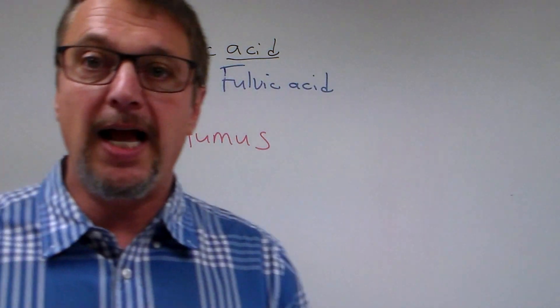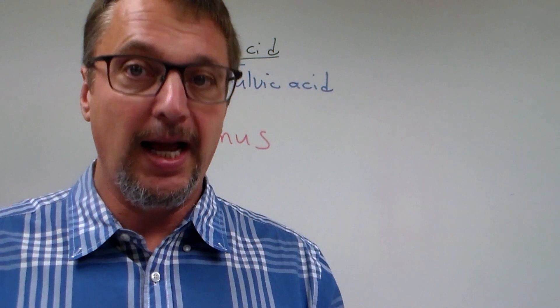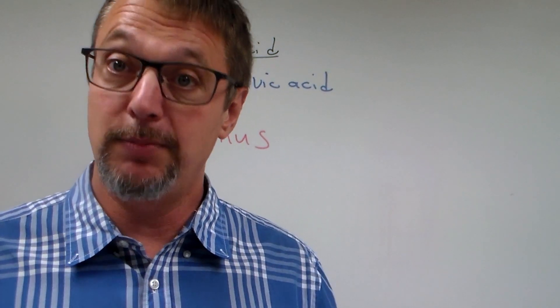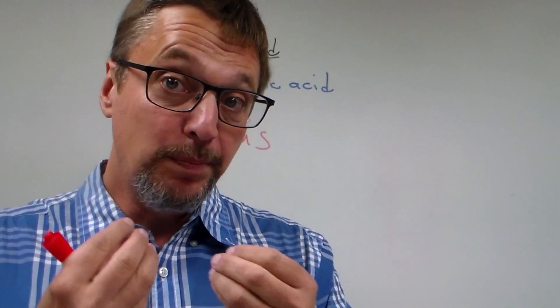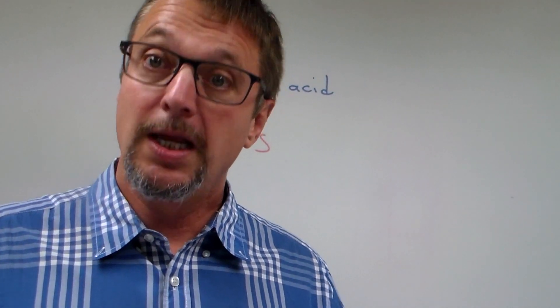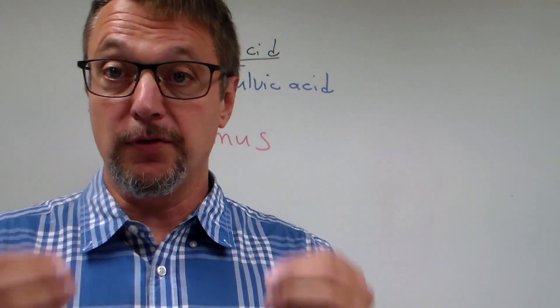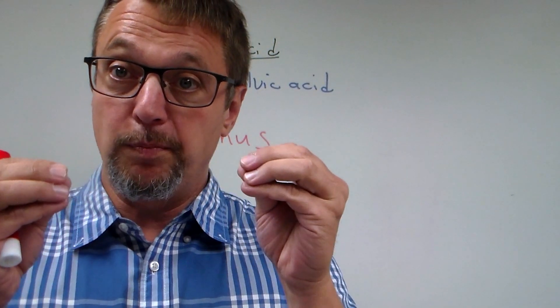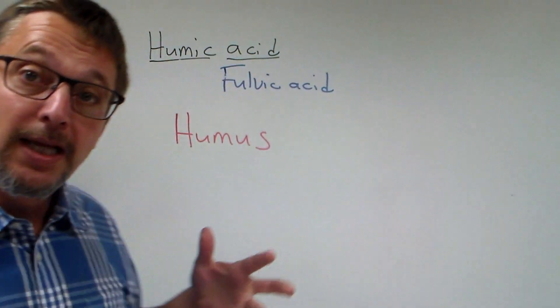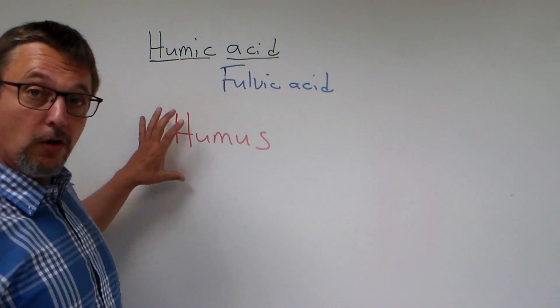Now, humus forms out in nature when living things die, they go through this process of decomposition. They break down into smaller pieces, and then the little pieces get incorporated into nutrient cycles out in nature. However, a small percentage of the organic material in these plants and animals actually joins together and gets bigger, it forms polymers. And these polymers are called humus.